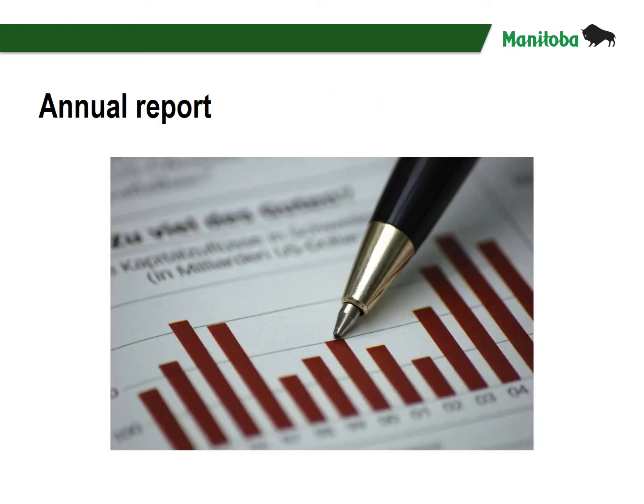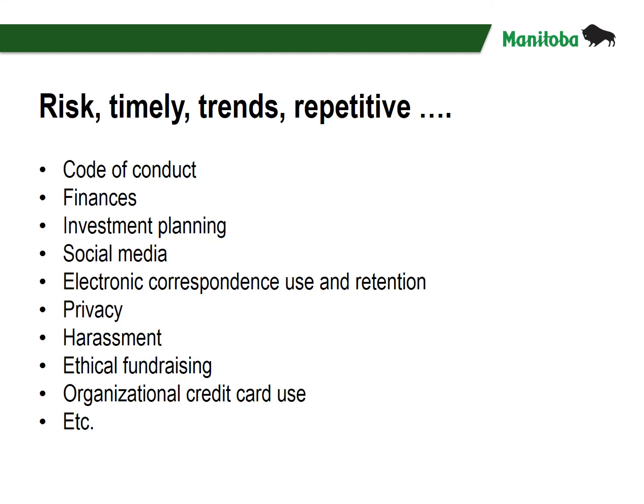Another useful tip is to include and reference the policies and procedures adopted during a year in the organization's annual report. For example, if an organization adopted a whistleblower policy and a confidentiality policy in 2019, they may wish to reference these in their annual report. I'm not here to tell you what your policy should be. Rather, I want you and your fellow board members to approach it with an eye toward avoiding risk — think in terms of what is risky, timely, or what the trends are.